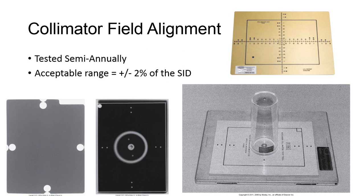The idea is that since a penny measures slightly more than 1.9 cm, if you can visualize the entire penny on either side of the collimated field on your radiographic image, you'll be outside acceptance limits using a 100 cm SID. The collimator field alignment test should be performed semi-annually.